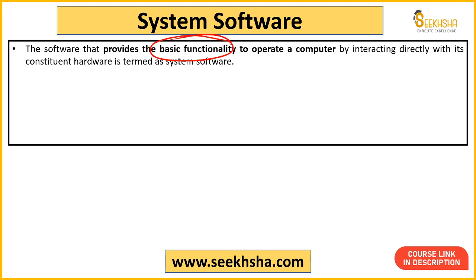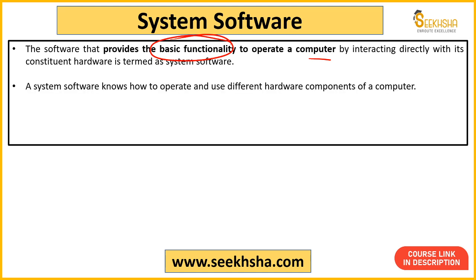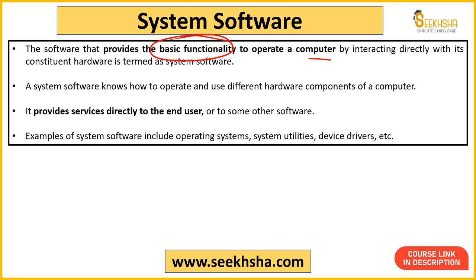When you turn on your computer, it runs on an operating system — Windows, Mac OS, Android. That is the operating system. If you didn't have an operating system on your computer, it would just be hardware. System software is what allows your computer to operate. The operating system is basic system software because without it, other software cannot run. When you power on the computer, the operating system starts and lets you use the computer.